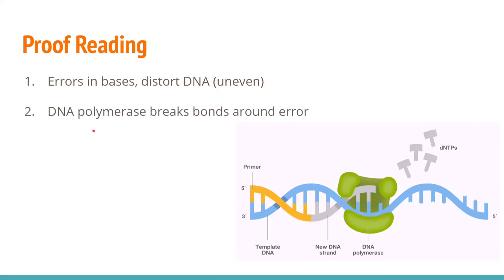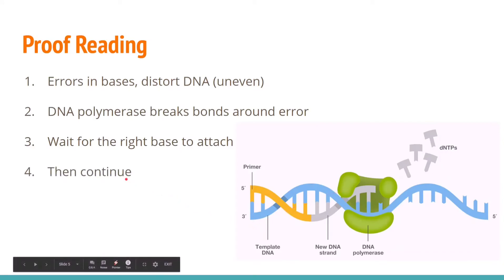DNA polymerase notices this and it breaks the bonds around this error and waits for the right base to attach so that it doesn't have the error. This ability to recognize an error in the DNA, break the bonds around it so that the correct base can insert itself, is very important in eukaryotic DNA. After this, the DNA polymerase continues down the strand.